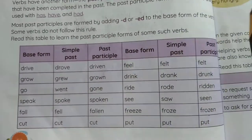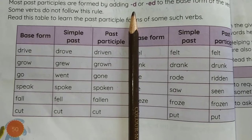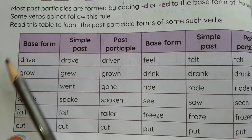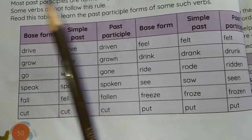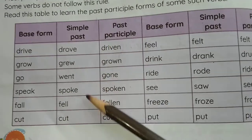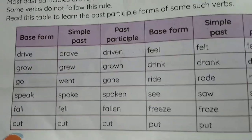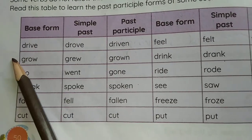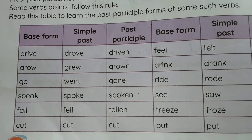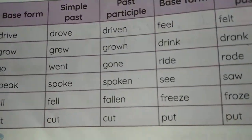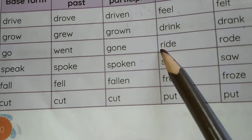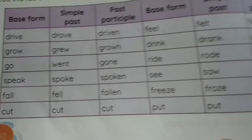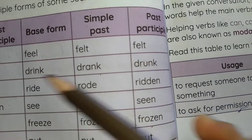Here we have the three forms of the verb — first form (base form), second form (simple past), and third form (past participle). Simple past denotes an action done in the past; past participle means the action has been finished. Drive/drove/driven, grow/grew/grown, go/went/gone, speak/spoke/spoken, fall/fell/fallen, cut/cut/cut, feel/felt/felt, drink/drank/drunk.